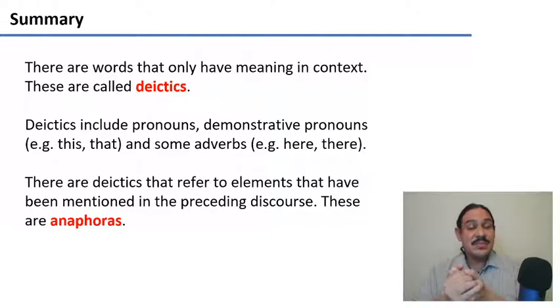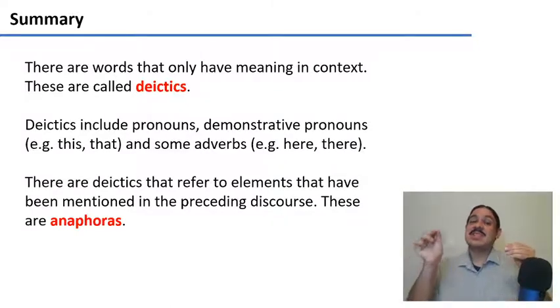There are deictics that refer to elements that have been mentioned explicitly before, and we call these anaphoras. And these are usually pronouns, like she or it, in the example that we had.